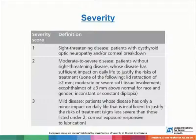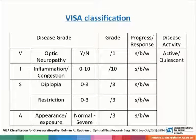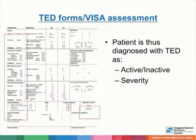The uGoGo classification of severity is divided as such. However, at Singapore National Eye Center, we use more of the VISA classification, which can be divided into optic neuropathy, inflammation or congestion, signs divided into diplopia or restriction of extraocular motility, and the overall appearance of the patient. This is an example of the thyroid eye disease forms which we use at Singapore National Eye Center. The patient is thus diagnosed with either active or inactive thyroid eye disease, and either mild, moderate, or severe thyroid eye disease based on their clinical appearance.